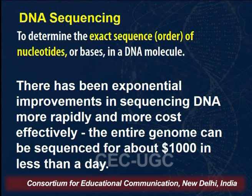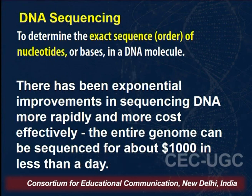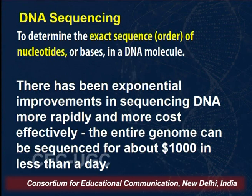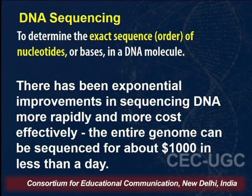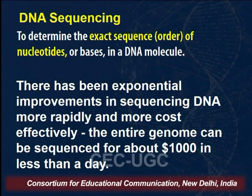There has been exponential improvement in sequencing DNA more rapidly and more cost effectively, and the entire genome can now be sequenced for about 1000 dollars in less than a day. When we started with the human genome project, it took more than 10 years, multiple institutions were involved, and it costed a lot of money. But nowadays there are many methods and platforms which have made DNA sequencing very cost-effective and rapid — and that is what we will be discussing today.